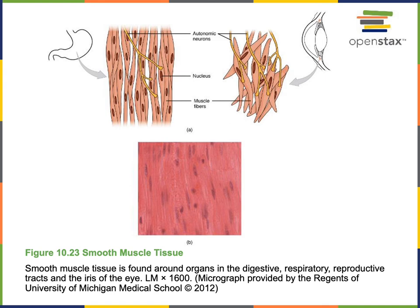There are also smooth muscles in the eyes. The iris is the smooth muscle that controls the diameter of the pupil to regulate the amount of light entering the eye. The ciliary muscles control the shape of the lens in order to focus light onto the photoreceptors in the retina of the eye. Smooth muscle is involuntary and is regulated by the autonomic nervous system.